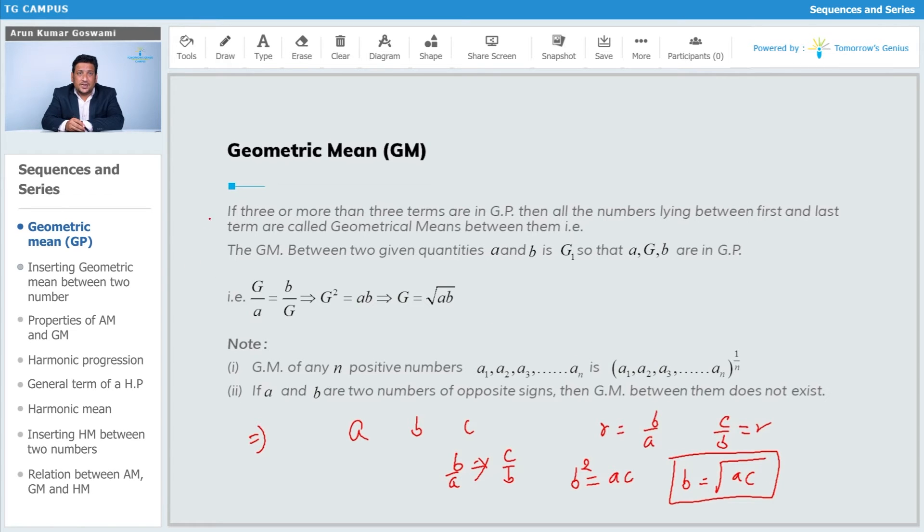The meaning of this is that b is nothing but a geometric mean. As I mentioned in the first statement, whatever numbers we have between the first and last term are known as geometric means. Here, b is the geometric mean, so b = √(ac).